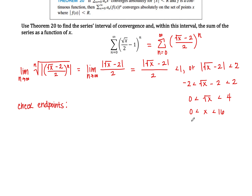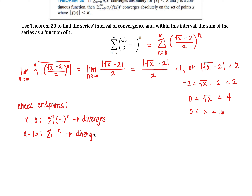At x equals 0: the square root of 0 is 0, so we get 0 minus 2 over 2, which is negative 1 to the nth power. We know that diverges. At x equals 16: the square root of 16 is 4, and 4 minus 2 over 2 is 1, so we get 1 to the nth power, which is just 1, and that also diverges. So our interval of convergence is the open interval from 0 to 16.